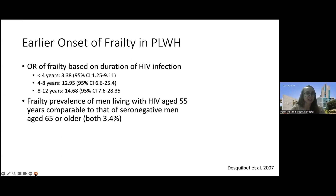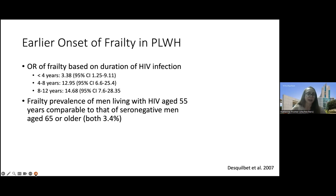Some studies have shown an earlier onset of frailty specifically in people living with HIV, depicted by the odds ratio of frailty based on duration of HIV. The longer one has HIV, the higher odds they have of having frailty. One study showed that frailty prevalence in men living with HIV age 55 was comparable to HIV-negative men age 65 or older — simplifying that: frailty starts about 10 years earlier in the setting of HIV.